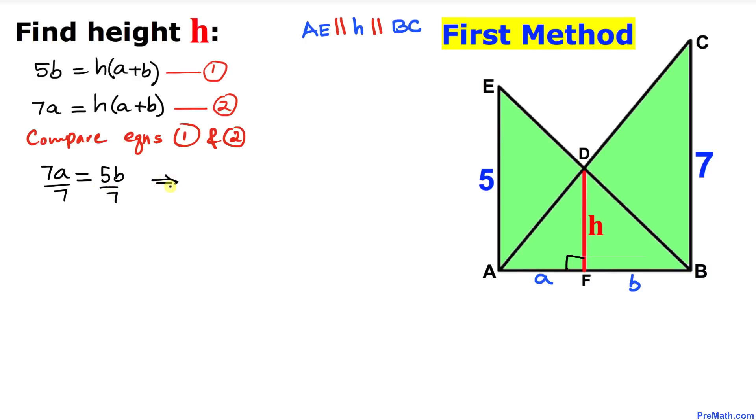If I divide both sides by 7, that means our A value equals 5B over 7. Just keep this in mind, and now let's substitute this A equals 5B over 7 value in equation 1. So our equation 1 becomes 5B equals H times, I'm going to replace A by 5B over 7 plus B.